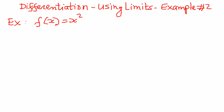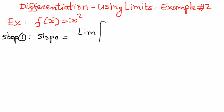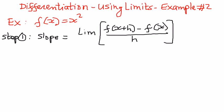To solve this problem, we're going to solve it in different steps. Step number one: in the first step, we're going to write the formula the way we know it. The formula for the slope, or the derivative, is going to be equal to the limit of f of x plus h minus f of x, divided by h, as h approaches 0. That is the formula.